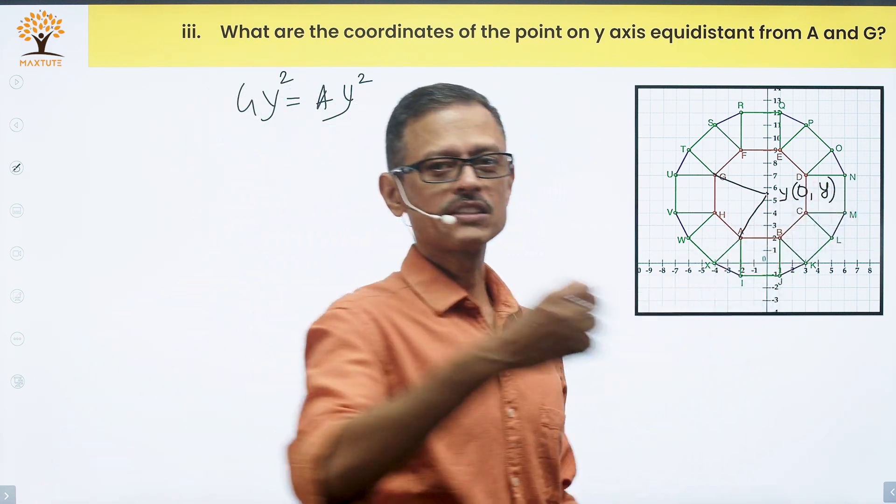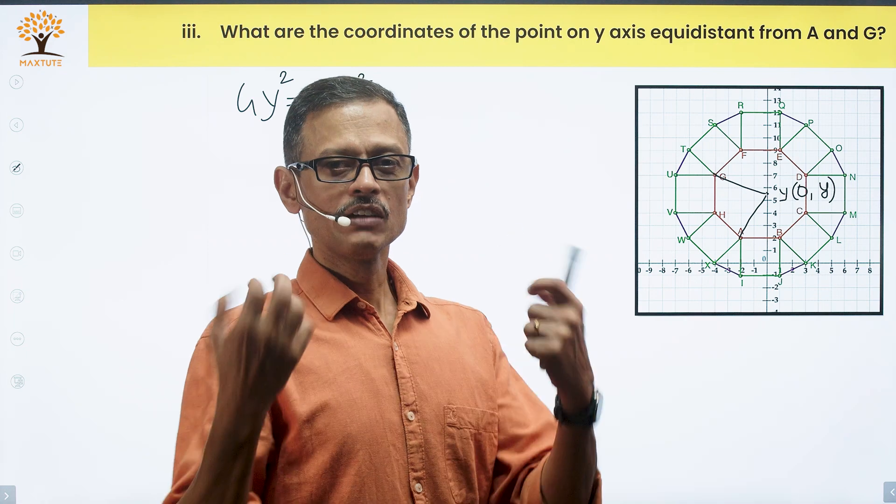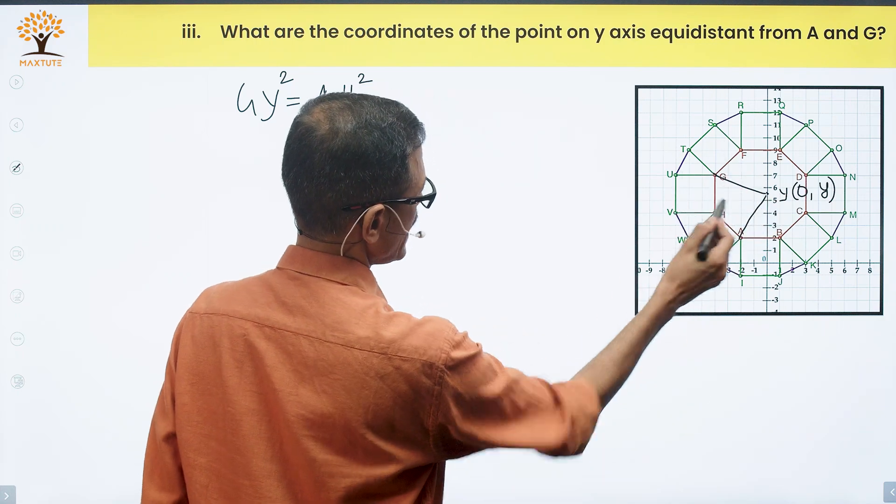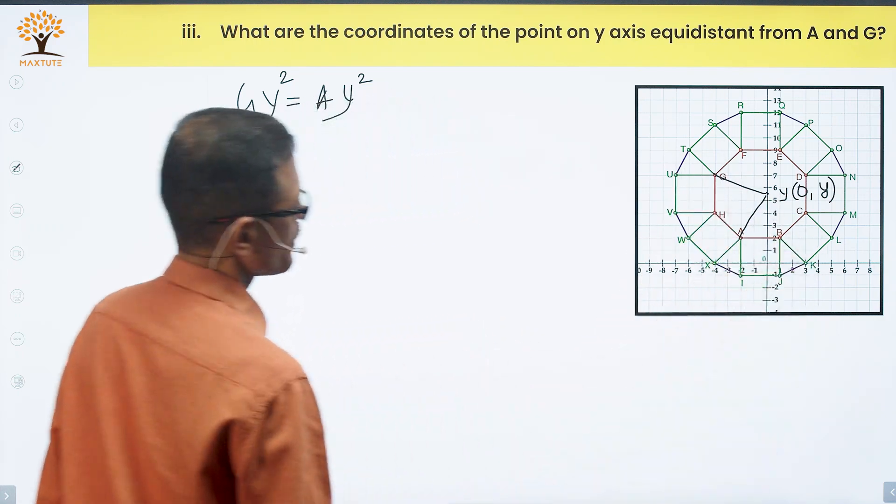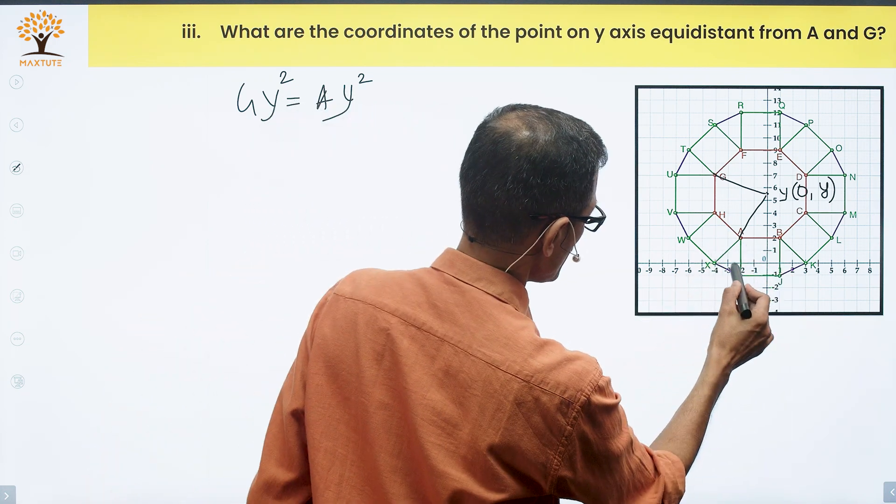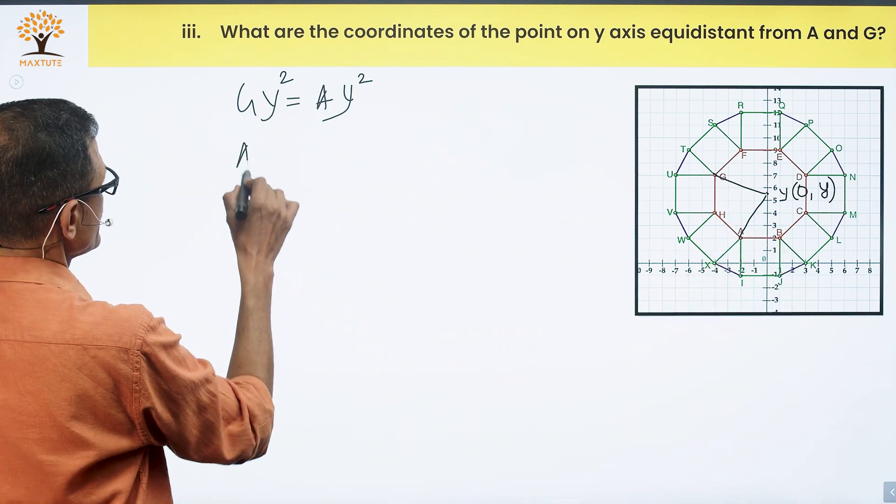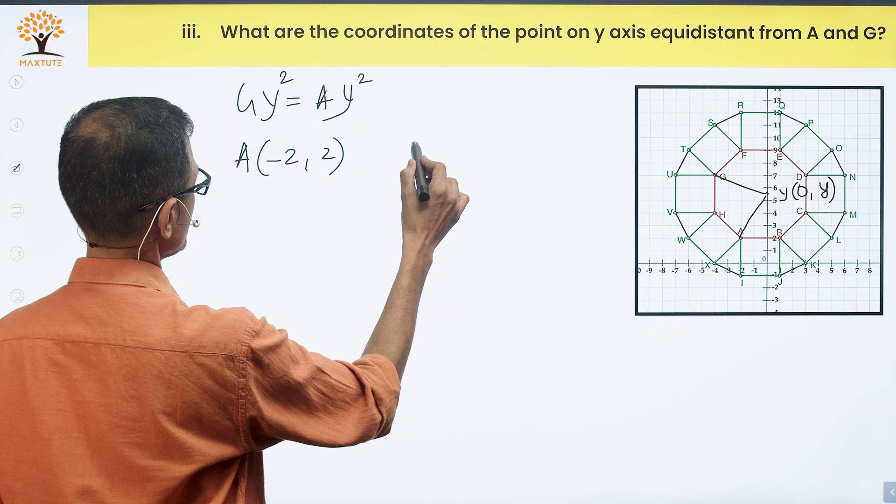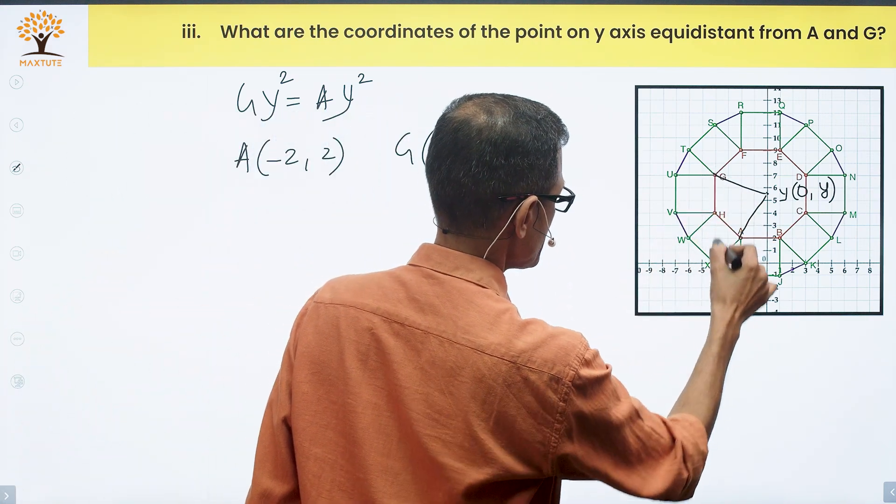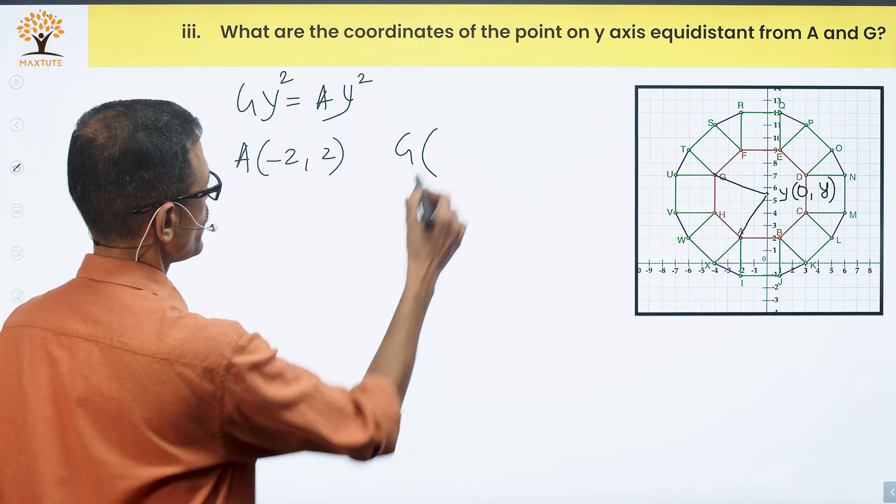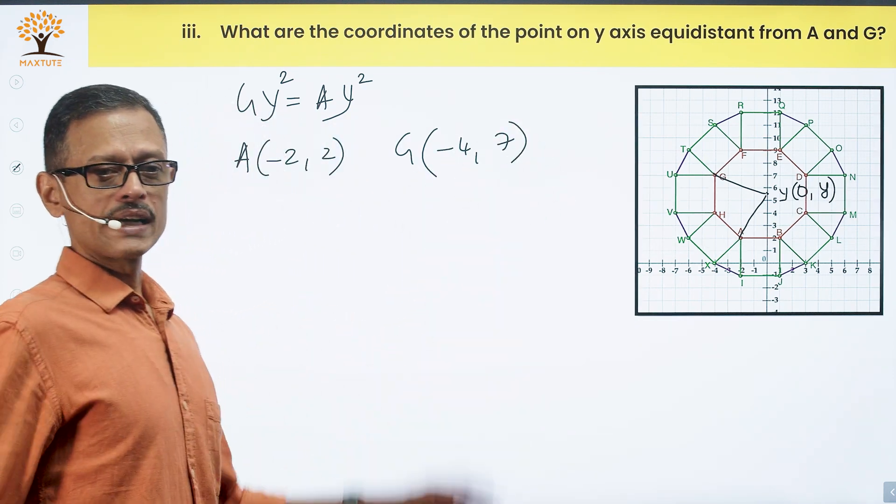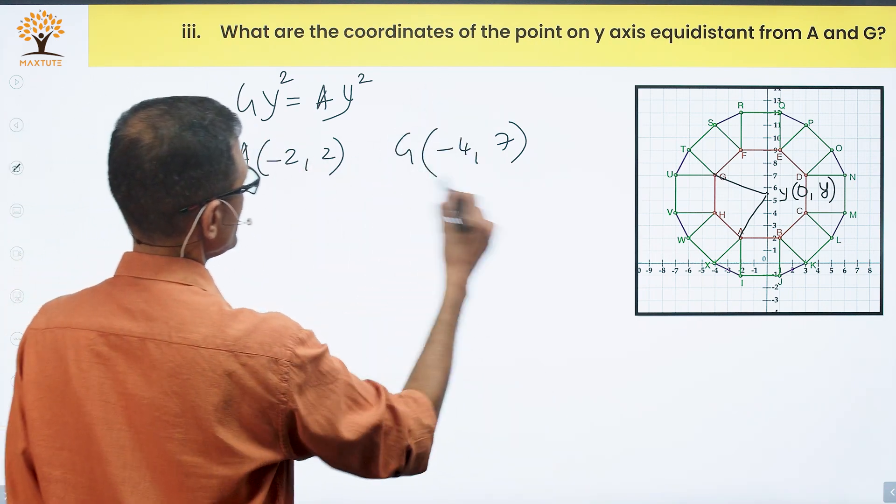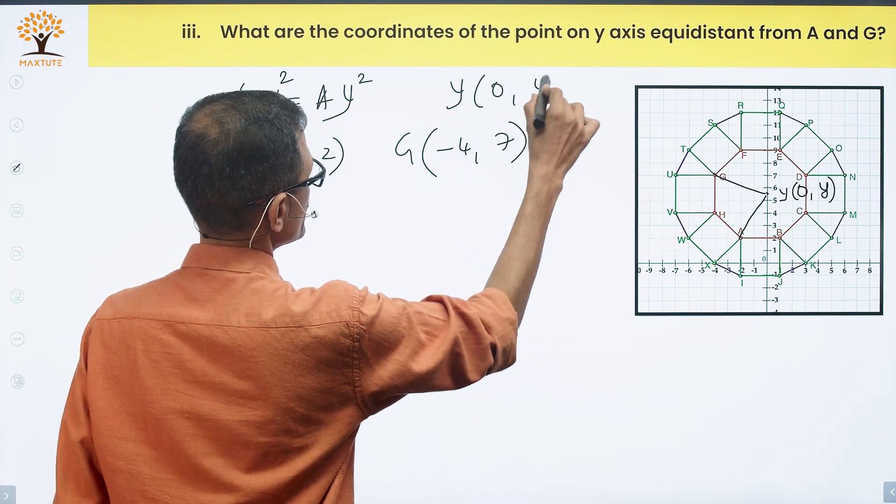Y is on the Y-axis. On the Y-axis, the X coordinate for any point is 0. So this is 0 and let's say its Y coordinate equals Y. Our objective is finding this value of Y. Coordinates of A: X coordinate is minus 2, Y coordinate is plus 2. Coordinates of point G are minus 4 on the X-axis and 7 on the Y-axis. So minus 4, 7 are the coordinates of G.